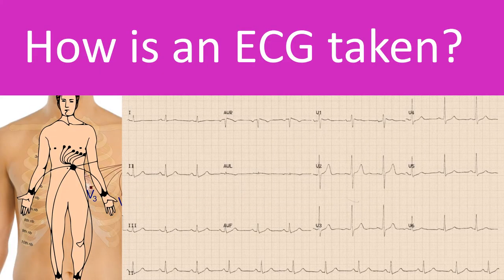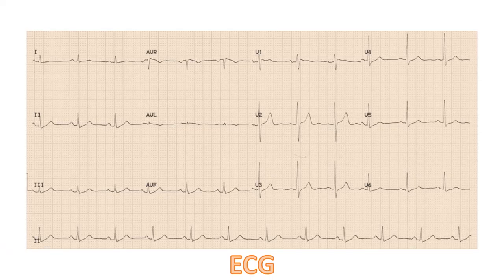ECG is short for electrocardiogram — the recording of the electrical activity of the heart. It is recorded by placing metallic contacts known as electrodes in specified parts of the limbs and chest, connecting them to the ECG machine known as an electrocardiograph. The electrical signals from the heart detected on the surface of the body are tiny, in the range of millivolts. The ECG machine amplifies these tiny signals and records the variations with time on a moving graph paper.